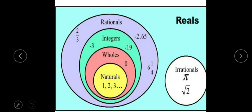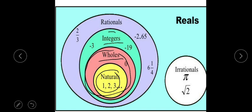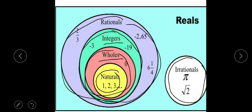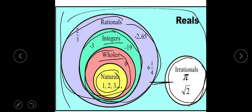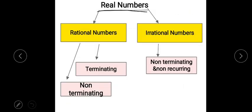Let's understand with the help of a diagram. All natural numbers are included in whole numbers; all whole numbers are included in integers; all integers are part of rational numbers. Irrational numbers don't have anything in common with these, but together they all combinedly form real numbers.